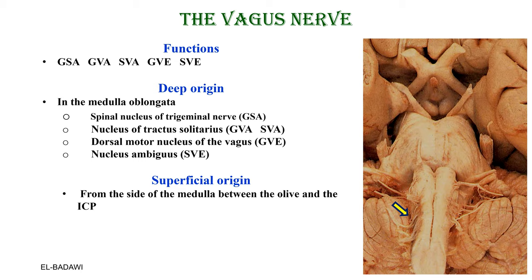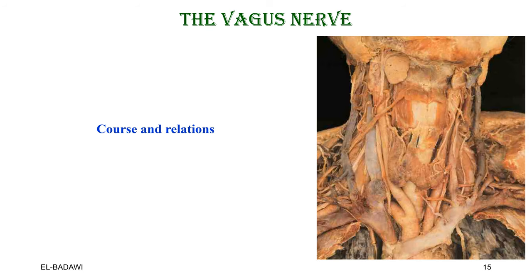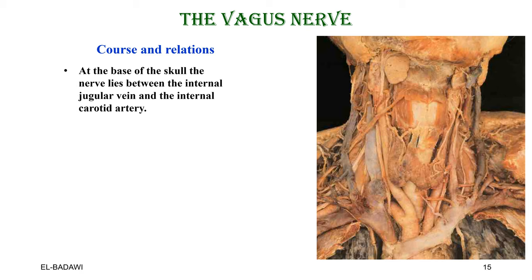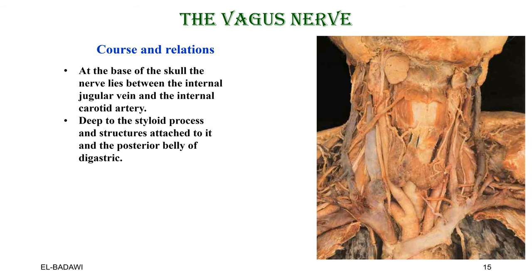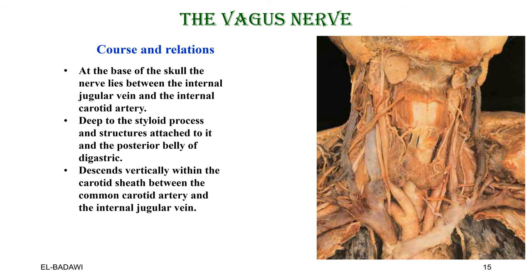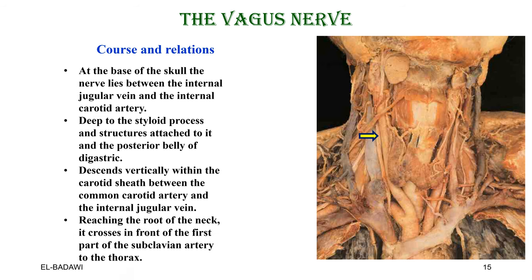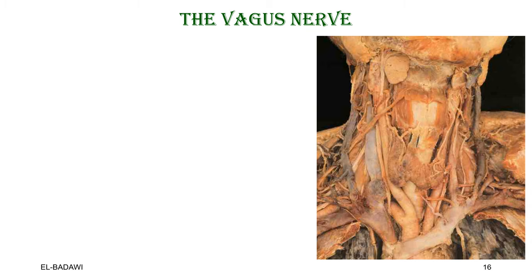The superficial origin, like the others, is between the olive and the inferior cerebellar peduncle. The foramen of exit is also the middle part of the jugular foramen. The course and relations of the vagus nerve at the base of the skull follow the same pattern: between the internal carotid and the internal jugular, deep to the styloid apparatus and the posterior belly of the digastric. It descends vertically in the carotid sheath between the common carotid and the internal jugular vein, reaching the root of the neck. On the right side it crosses the first part of the subclavian artery, giving the right recurrent laryngeal nerve.